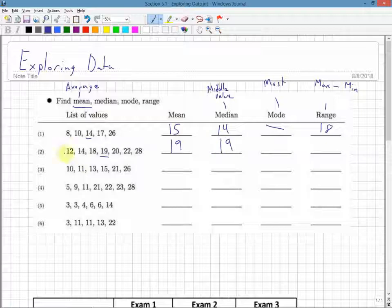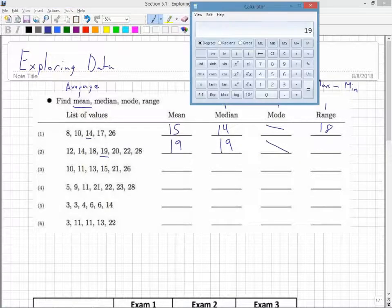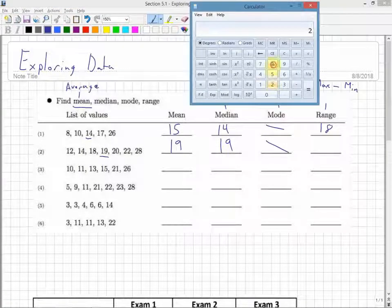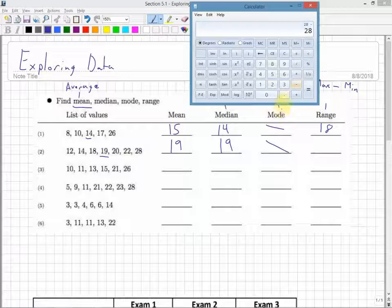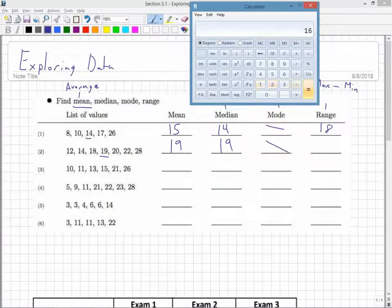The mode in this case - 12, 14, 18, 19, 20 - no repeating values, so I don't have a mode this time either. The range is the maximum value subtracted by the minimum value, which is 16.